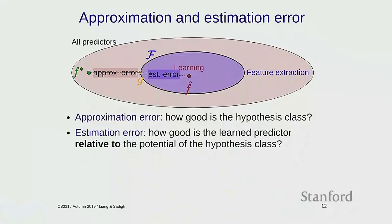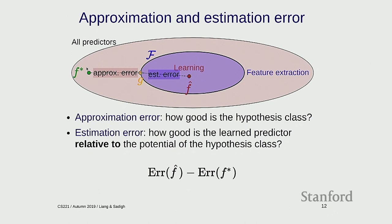The second part is estimation error — the difference between the best thing in your hypothesis class and the function you actually find. This measures how good a learned predictor is relative to the potential of the hypothesis class. You define this hypothesis class, but based on a finite amount of data, you can't get to G. You do learning and you get to some F-hat. In more mathematical terms: the error of F-hat minus the error of F* equals (error of F-hat minus error of G) plus (error of G minus error of F*). The first term is estimation error; the second is approximation error.